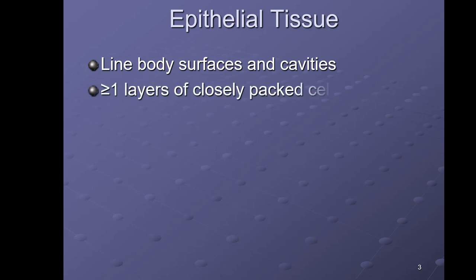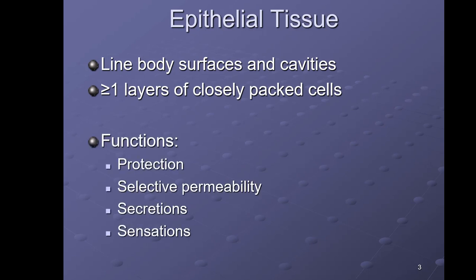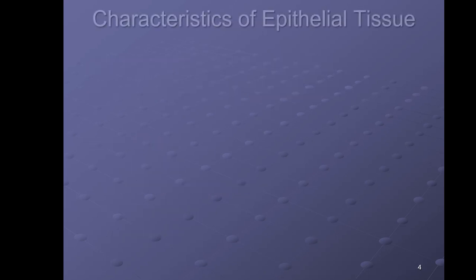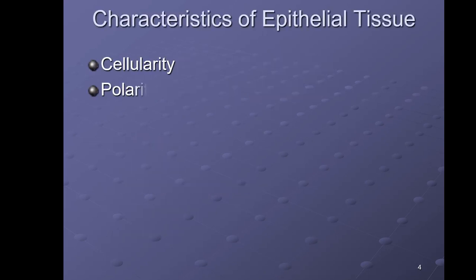Epithelial tissue consists of one or more layers of closely packed cells. Its functions include protection, selective permeability — letting certain things through but not others — secretions, such as sweat glands, and sensations, meaning your ability to feel touch.